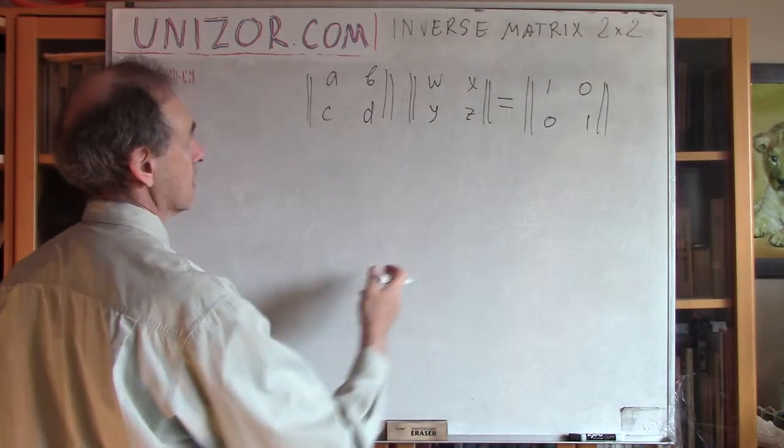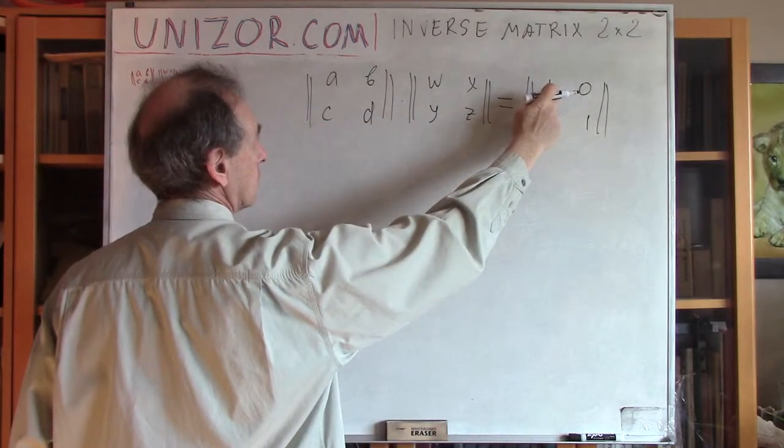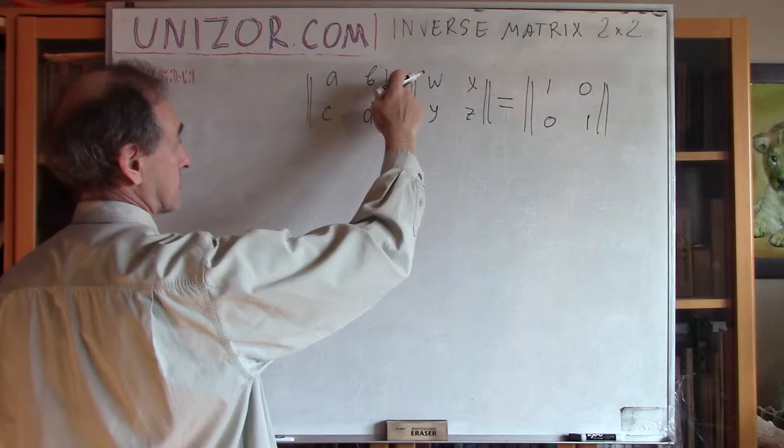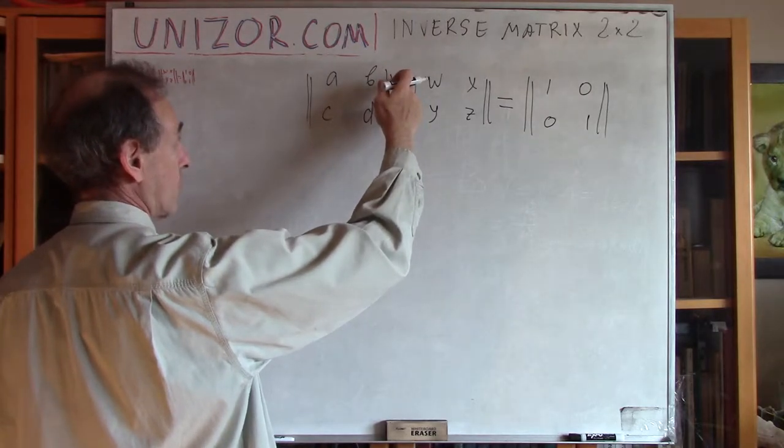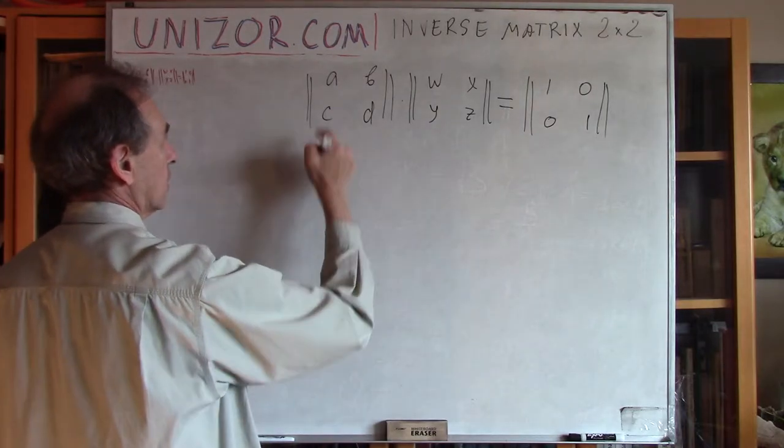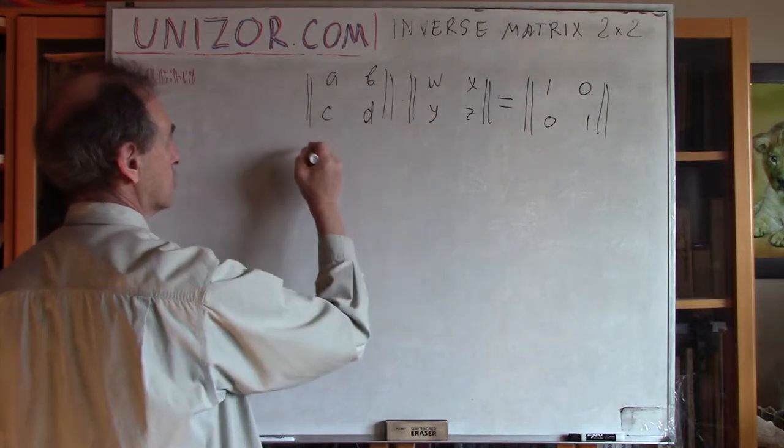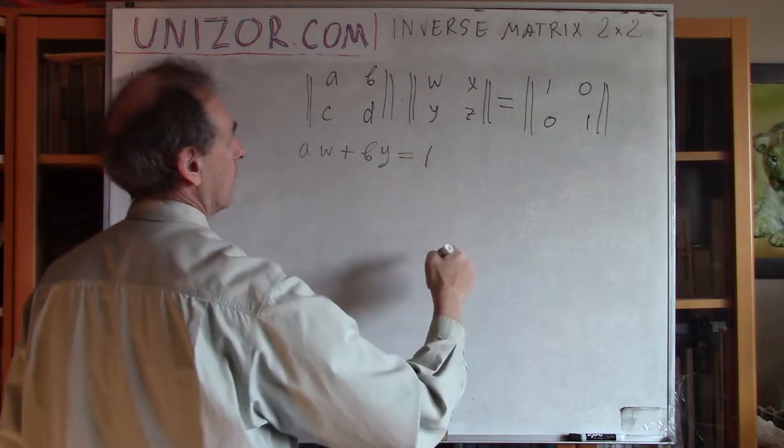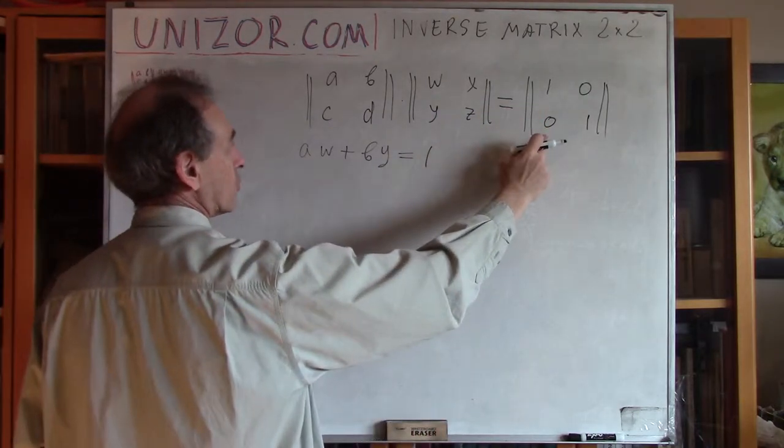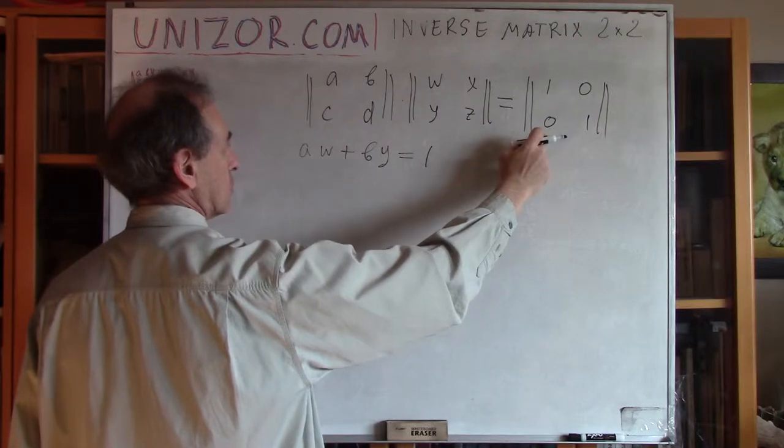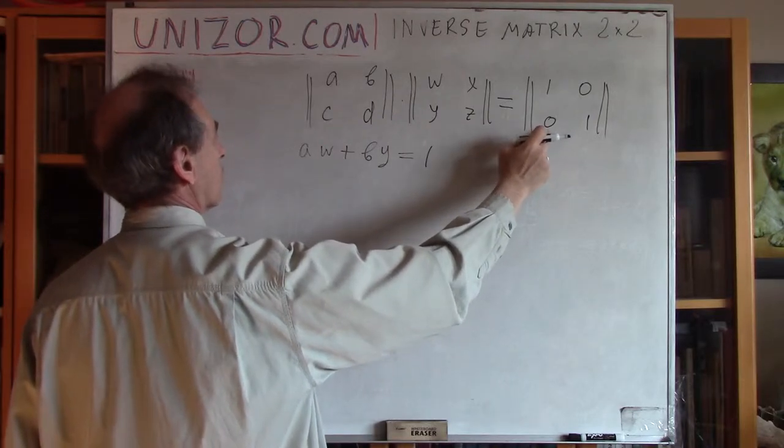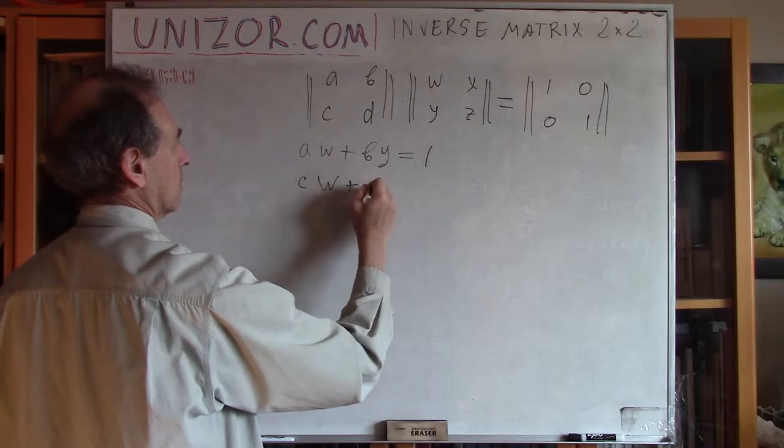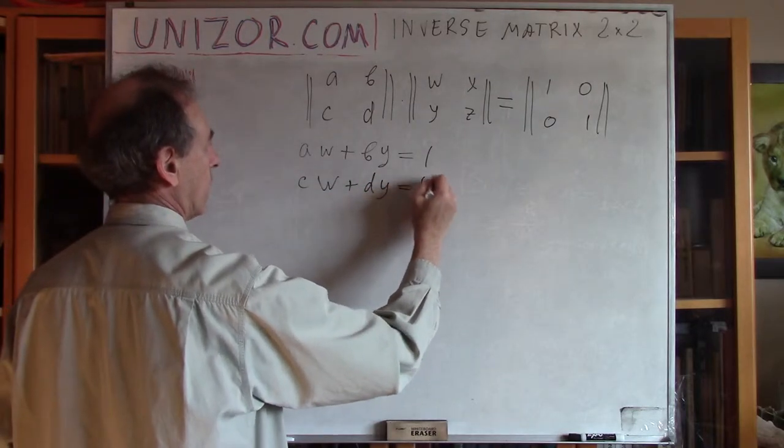Okay. How to multiply two matrices? To get an element 1,1. First row and first column. We have to multiply scalar product first row, vector row by first vector column. So, it's AB times WY which is AW plus BY is equal to 1. Next. How to get second row, first column. 2,1. Element 2,1. Second row, first column. Well, it's second row and first column, scholarly multiplied. And this is zero.